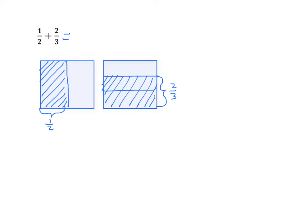Let's look at this one. We're going to examine this through the area model that we've been working with all along, and see how we can do this numerically instead. So if we look at our problem, let's look at the first model: 1 half. What we've been doing is taking these two parts and partitioning them, duplicating these lines in the second rectangle. We'll also notice that this is split into 3 parts, and our denominator here is 3. So we're going to split this into 3 equal parts, and each part now becomes 3 parts, with 6 parts in all.